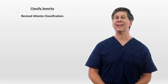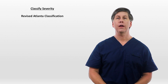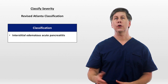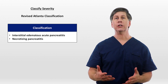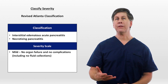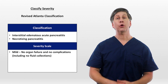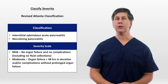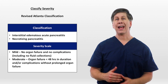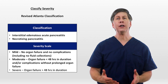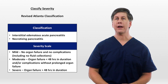The most common way to classify pancreatitis is the revised Atlanta classification system. This first categorizes cases into either interstitial edematous acute pancreatitis or necrotizing pancreatitis, depending on the pancreas' radiographic appearance. Then the severity of each is graded mild if there is no organ failure and no complications including no peripancreatic fluid collections, moderate if there is organ dysfunction lasting less than 48 hours and/or complications without prolonged organ failure, and severe if there is organ failure lasting longer than 48 hours.